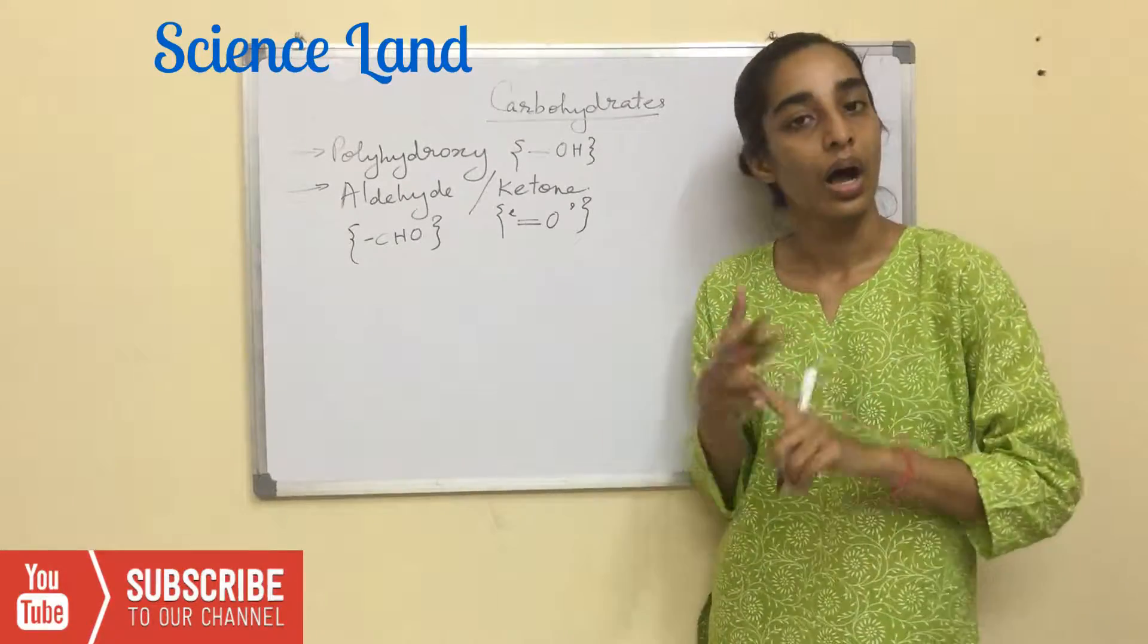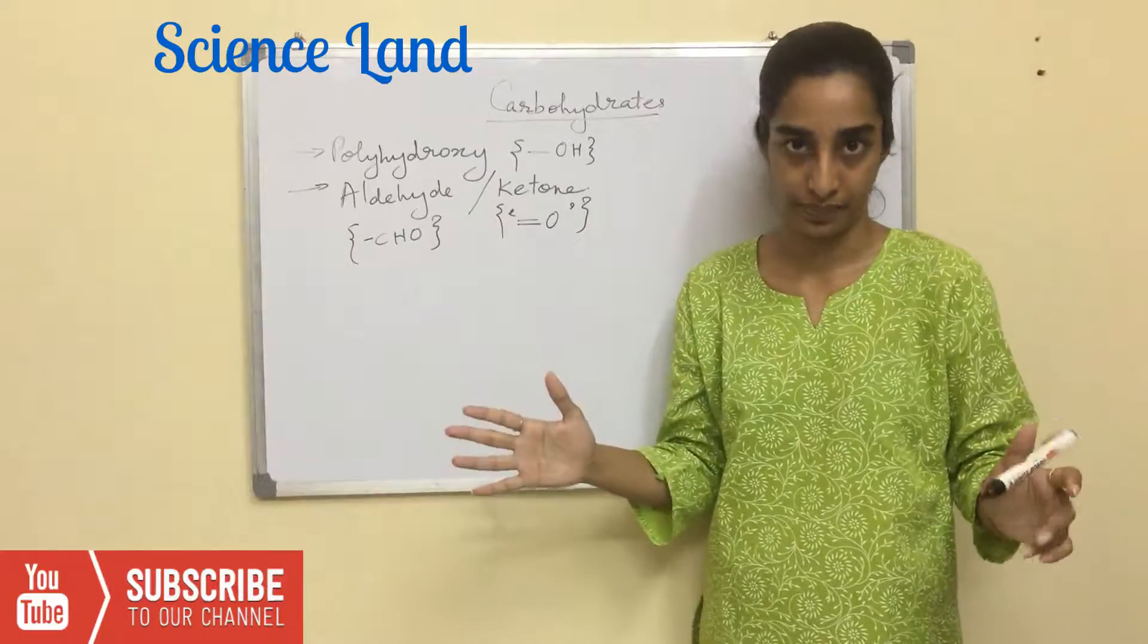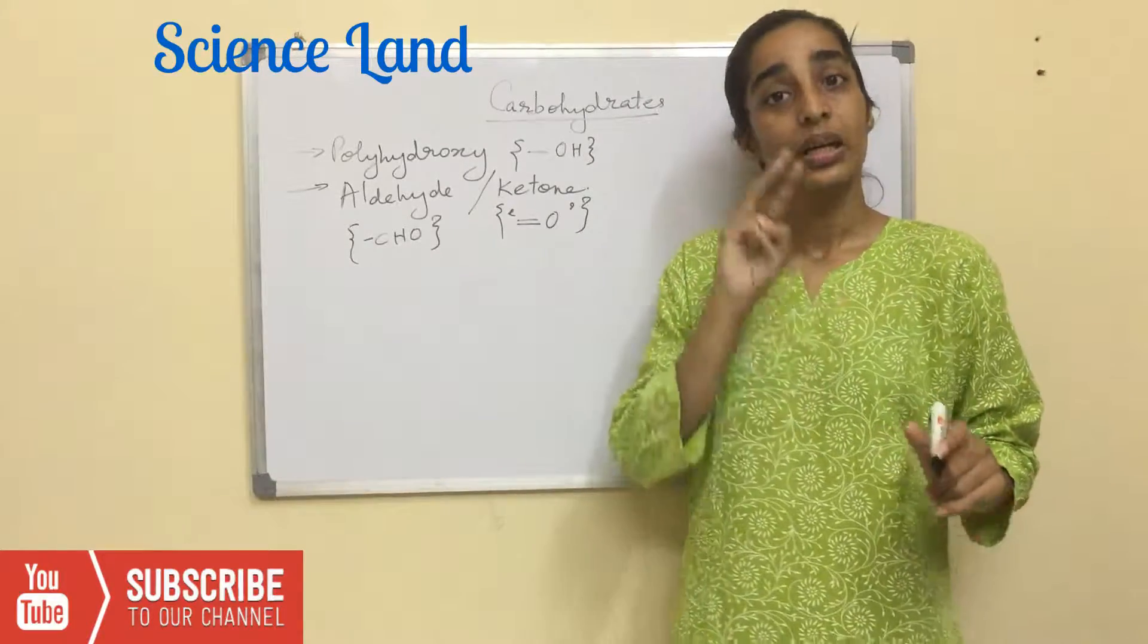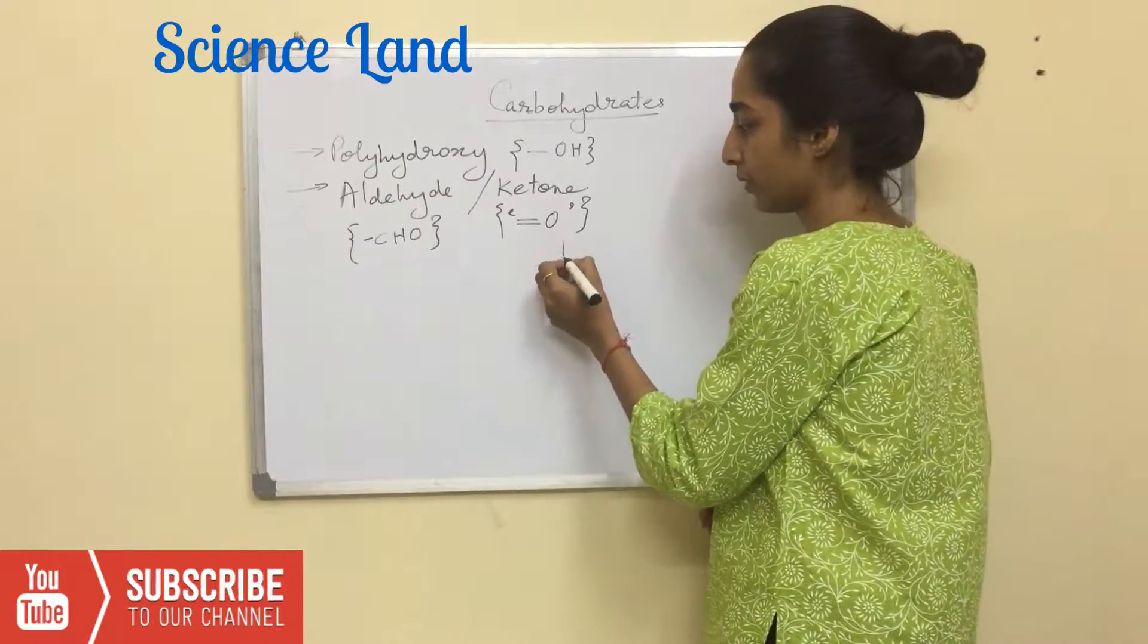Whenever you look at a molecule of carbohydrate, remember just these two things: it has to be a polyhydroxy molecule along with presence of either an aldehyde or a ketone. Now there are three classes of carbohydrates.